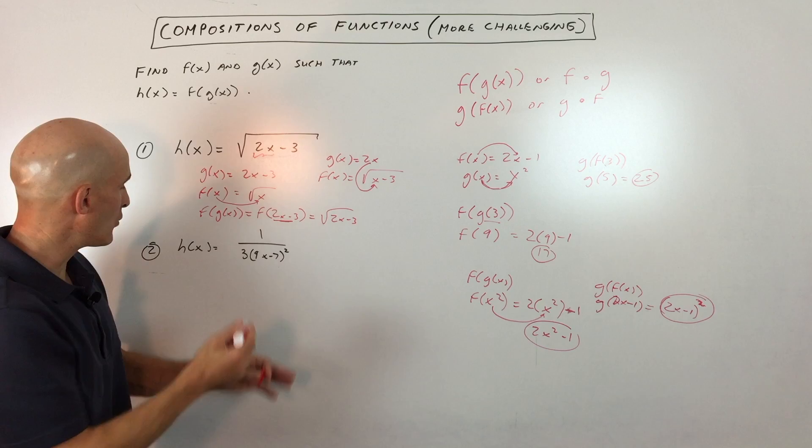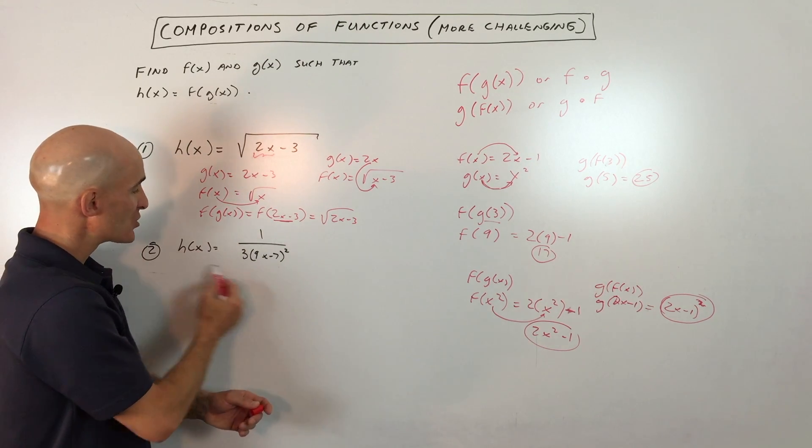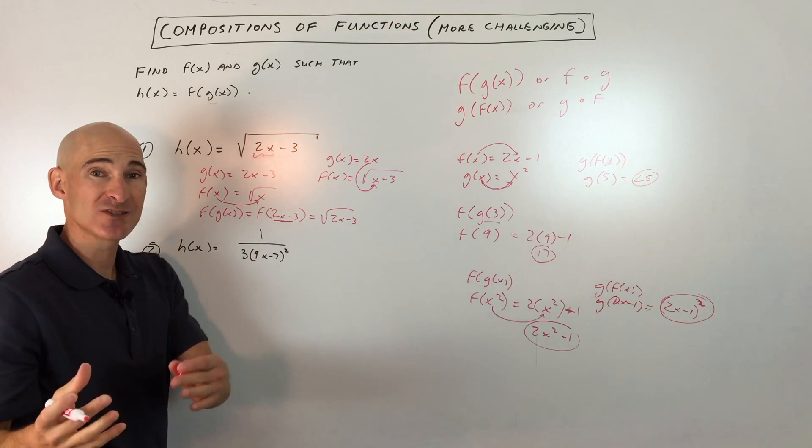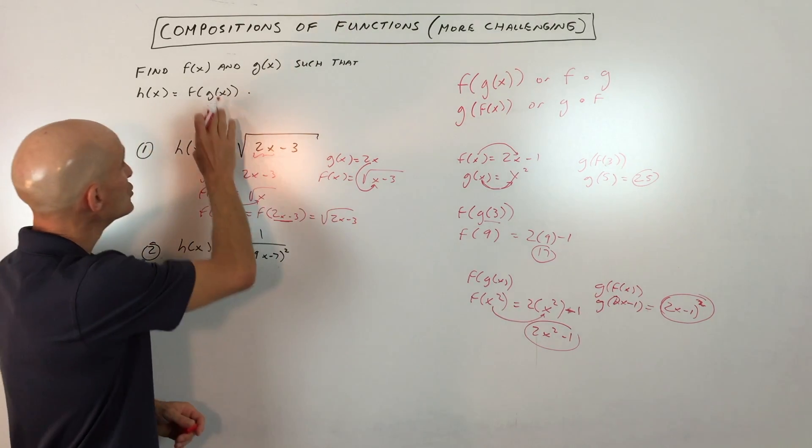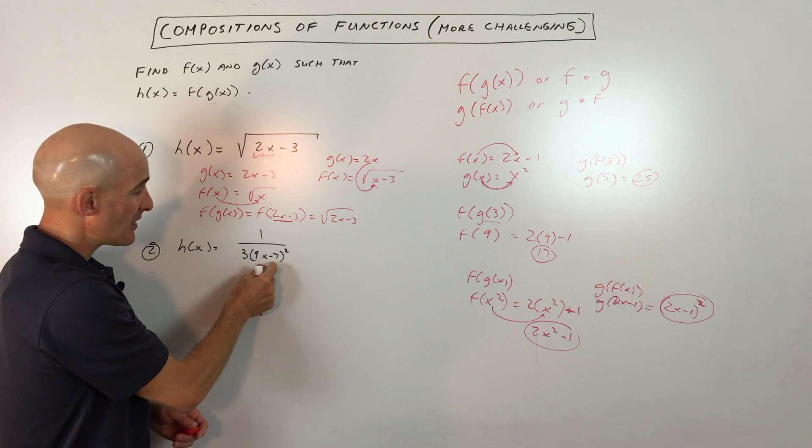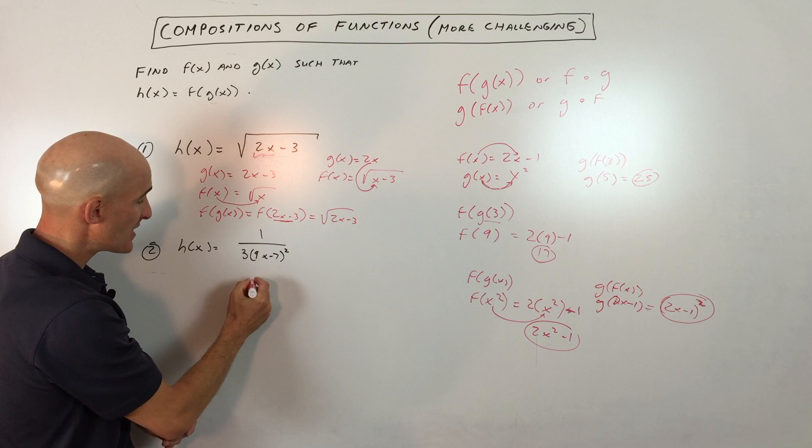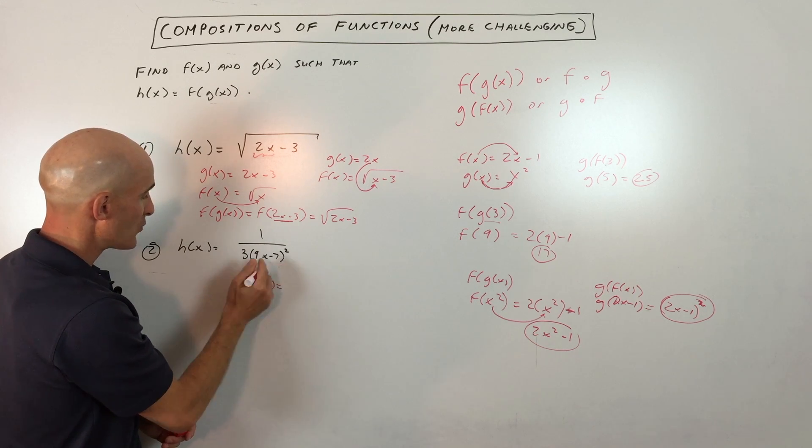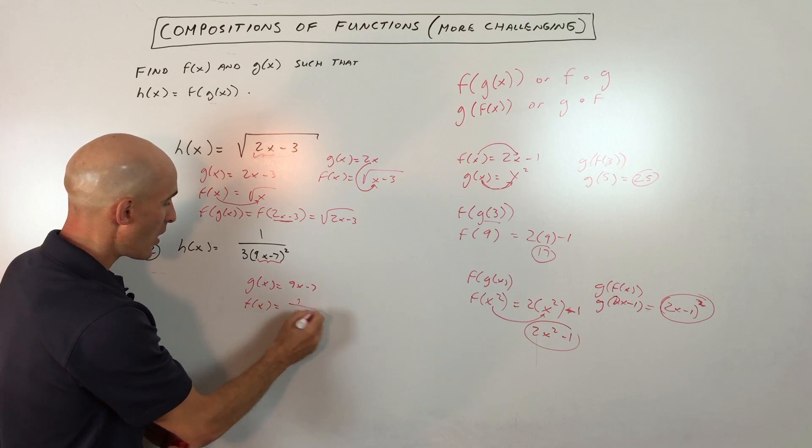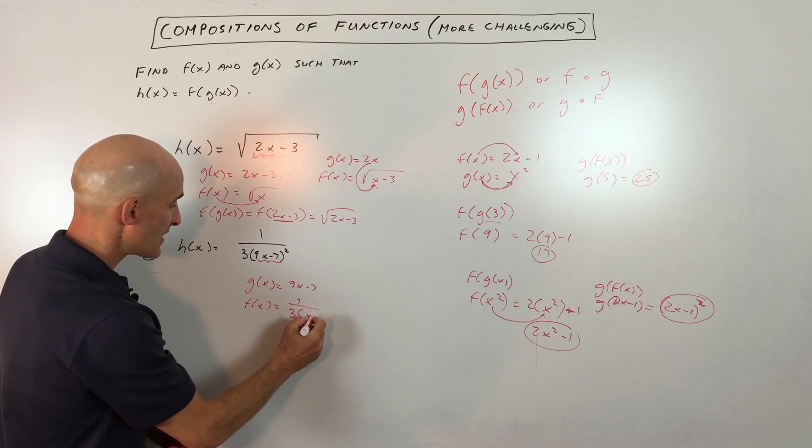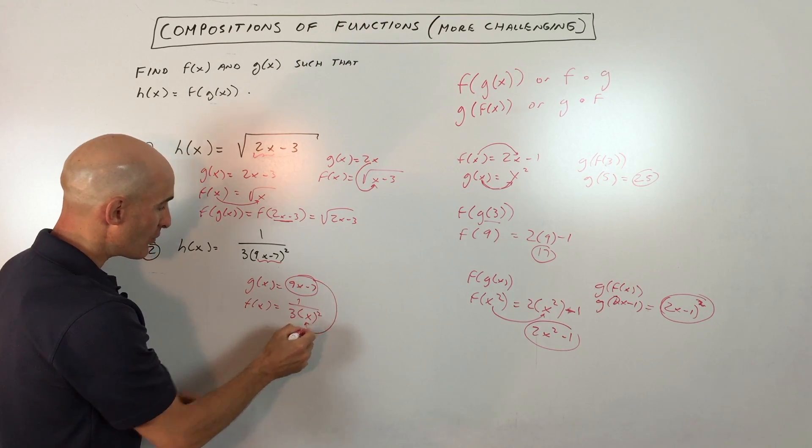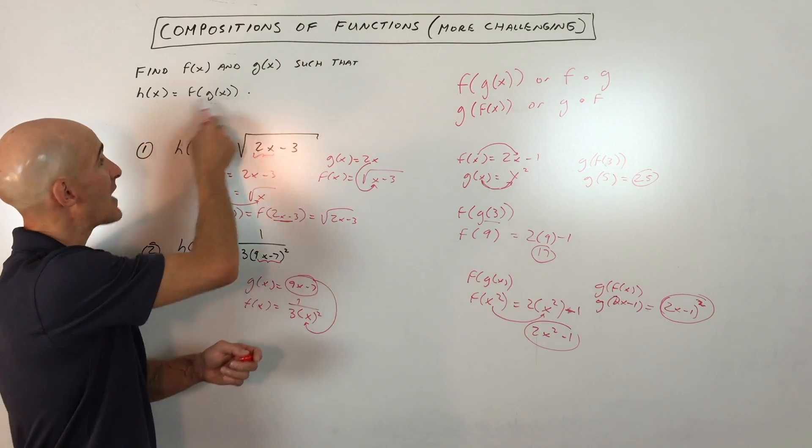These are a little more challenging. Let's look at another example. Here they give us the result of composing f(g(x)), and usually the easiest way to do it is to think about g(x) as the inner quantity - look for the innermost quantity in this function. We could say g(x) = 9x - 7 and f(x) = (1/3)x². Now you can see you're putting 9x - 7 in place of x when you do this composition.